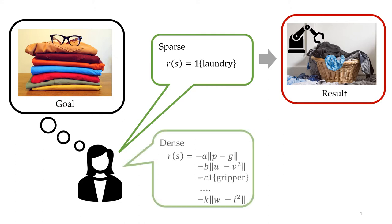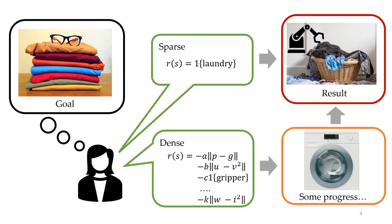Alternatively, we could hand engineer a bunch of different dense reward signals. While this may lead to some task progress, it's hard to write distances for every aspect of the task, and we might still end up failing after hours of engineering effort. Moreover, hand-designed reward functions might not capture what we actually want.